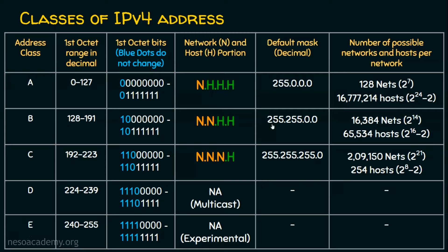Coming to class B: the first two octets are the network portion, and the last two octets are the host portion. The default subnet mask for class B is 255.255.0.0. Any IP address must have its first two octets matching to belong to the same network. For the number of networks: we have 16 bits for the network portion, but 2 bits are reserved for class identification (starting with 1,0), leaving 14 bits — so 2^14 = 16,384 networks are possible.